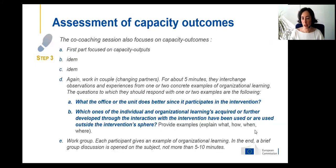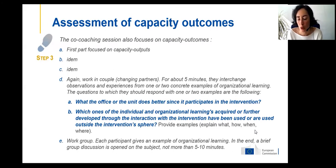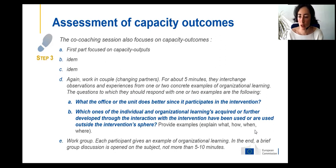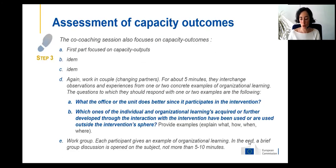In the pairs exercise, we ask two basic questions: what does the office, unit, or department do better since it participated in the intervention? And which individual and organizational learnings acquired have been used outside of the intervention's sphere? We always ask for concrete examples. Then in group work, each participant gives examples of organizational learning and roles are reversed between the pairs.